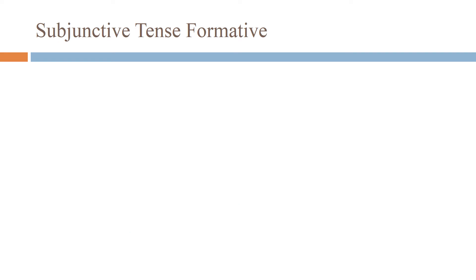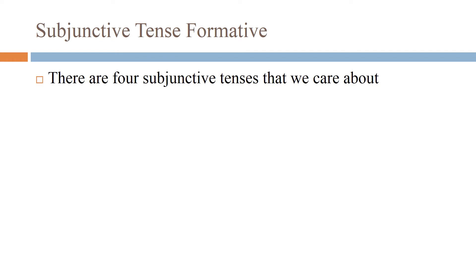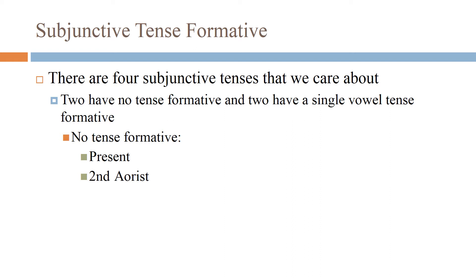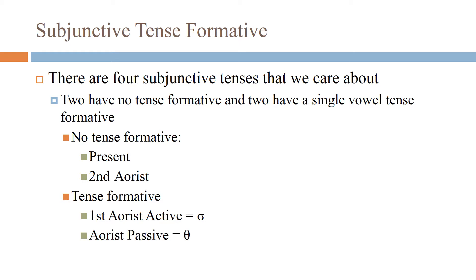Regarding the subjunctive tense formative: there are four subjunctive tenses we care about. Two have no tense formative — the present and the second aorist, just as in the indicative. Those with tense formatives are the first aorist active, which has a tense formative of sigma, and the aorist passive, which has a tense formative of theta.